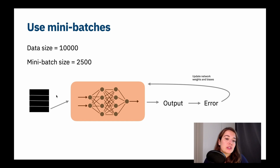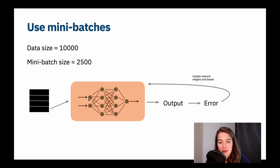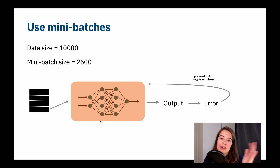With stochastic gradient descent, you feed data into the network one by one: feed one example, calculate the output, calculate the error, update the network, then move on to the second example, and so on. With batch gradient descent, you give the whole data set to your network each time — no division — and repeat this for each epoch: give all the data, calculate the error, update the network.